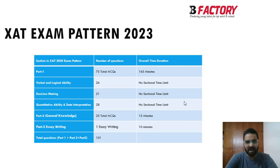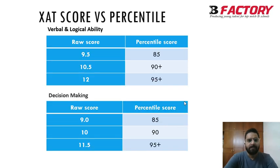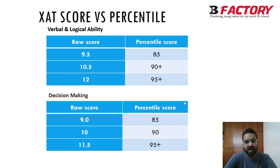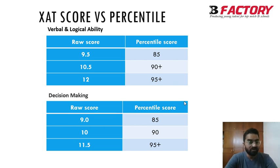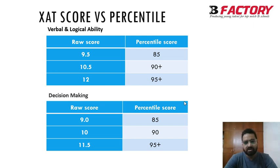In XAT the marking scheme is +1 for correct and −0.25 for wrong answers, with five options per question. For the VA/LR section, a score of 9.5 will give around 85th percentile, 10.5 will be 90th percentile, and a score of 12 out of 26 will be around 95th percentile.